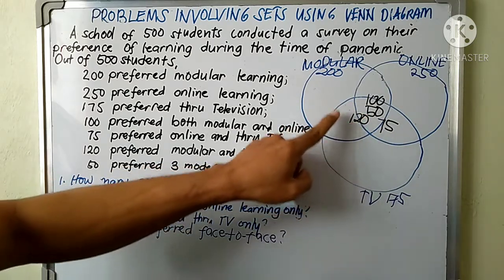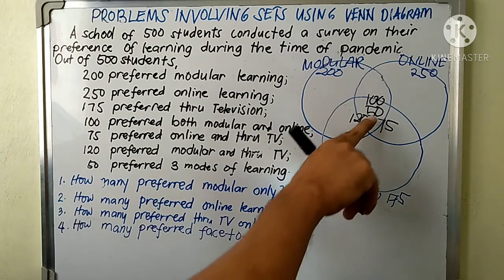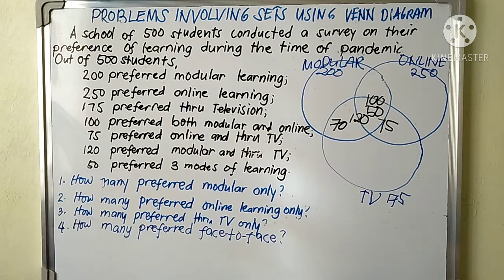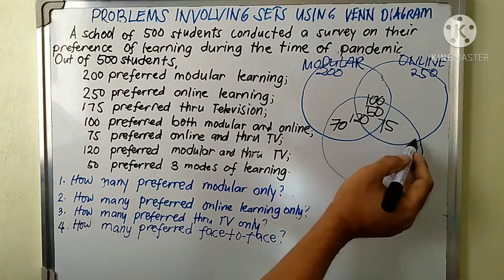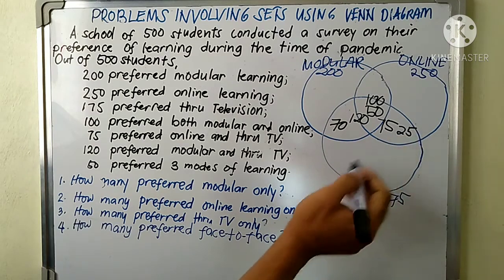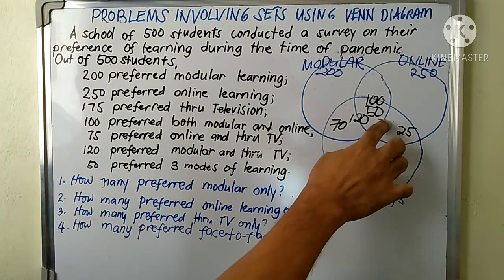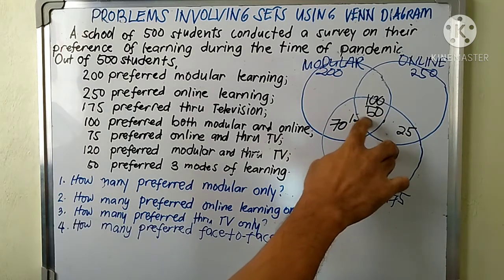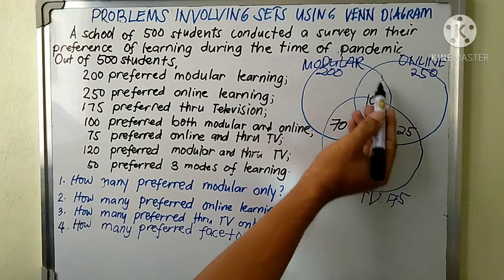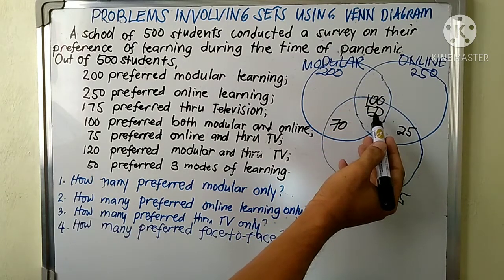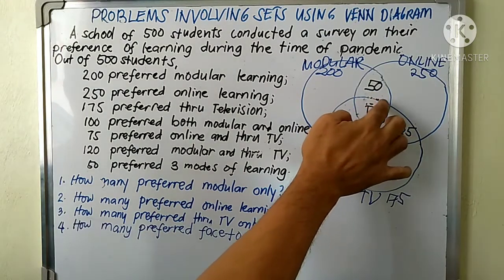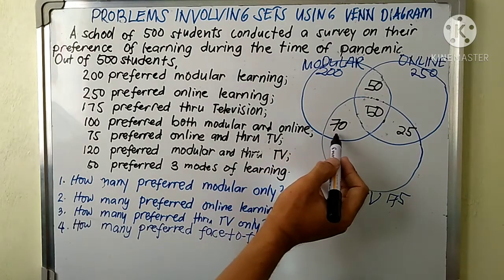For the modular-and-TV intersection, there is already 50 in the middle, so that portion is 120 minus 50, which equals 70. We can also find the online-and-TV portion: 75 minus 50 equals 25. And for the modular-and-online portion: 100 minus 50 equals 50. We remove the original totals since we are done distributing those numbers.